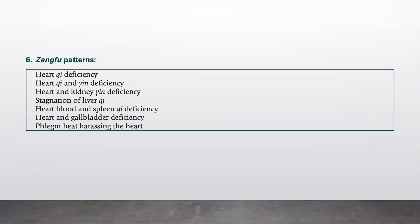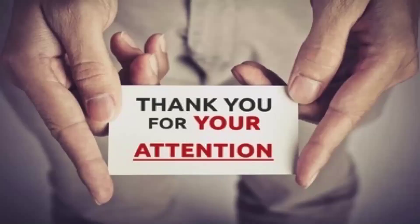Now let's go to the Zang Fu patterns. Anxiety in Chinese medicine may indicate heart qi deficiency, heart qi and Yin deficiency, heart and kidney Yin deficiency, stagnation of liver qi, heart blood and spleen qi deficiency, heart and gallbladder deficiency, and phlegm heat harassing the heart. Thank you for your attention.